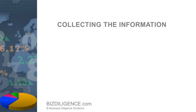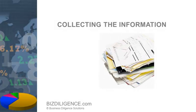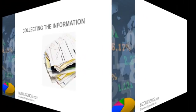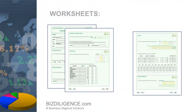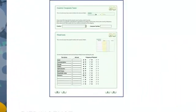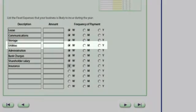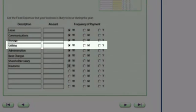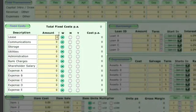Collecting the necessary information. Because the information that goes into our financial forecast is unique to each business, you will be required to physically collect it yourself. The chances are that the information will be easy to find, or you may even already know the answers. To do this, you can use the worksheets that are available to you. For example, you will be required to provide the estimated cost of utilities and the frequency of payments. Once the information is collected, simply transfer it into the respective section of the input area.